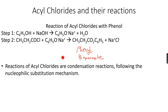To summarise: whenever we need to form an ester using phenol, we first react it with NaOH to form sodium phenoxide, and then react it with an acyl chloride. To produce the acyl chloride, we can react the original carboxylic acid with PCl₅. The acyl chloride is then added to sodium phenoxide to form the ester, with NaCl as the side product.